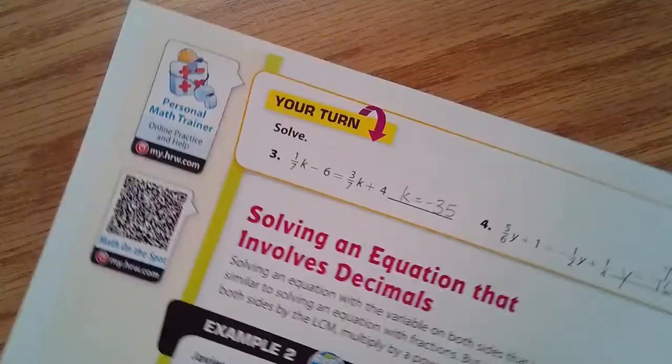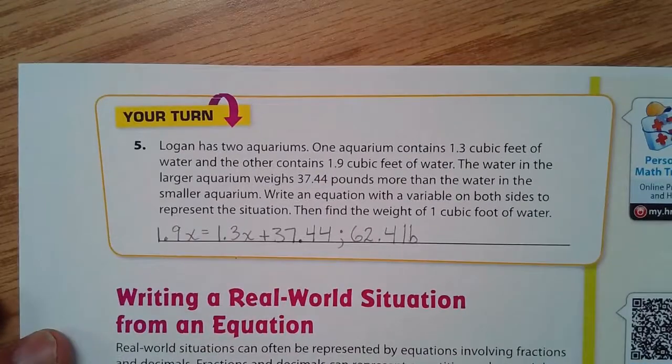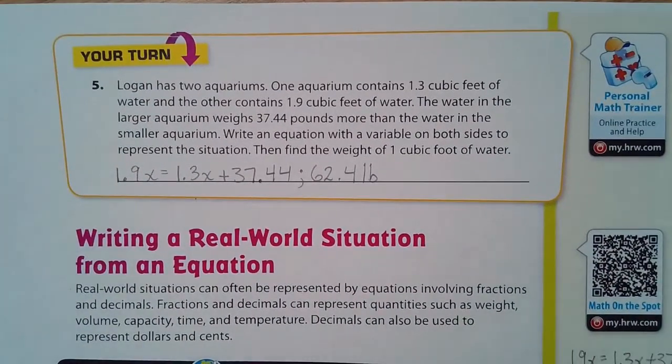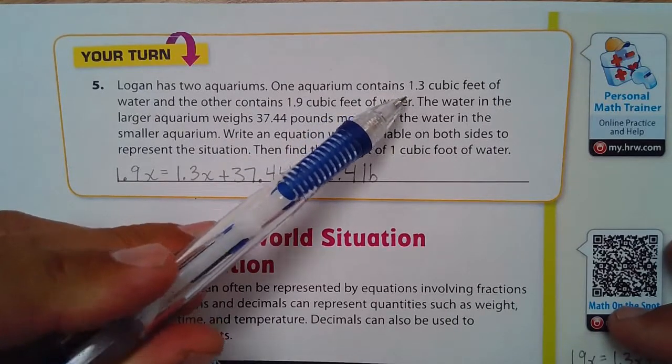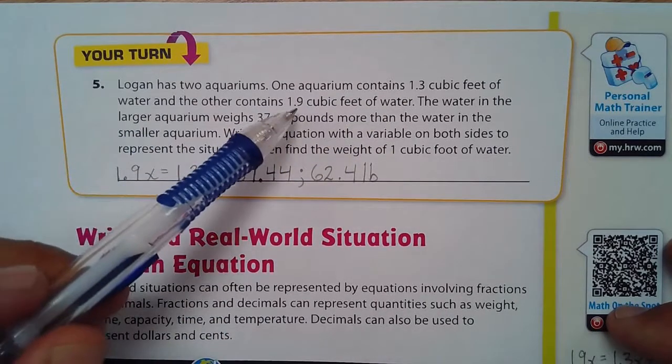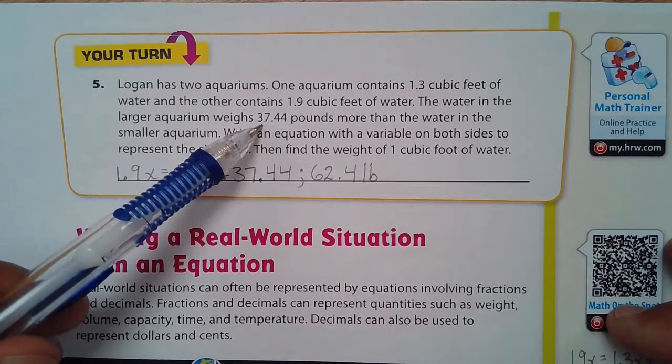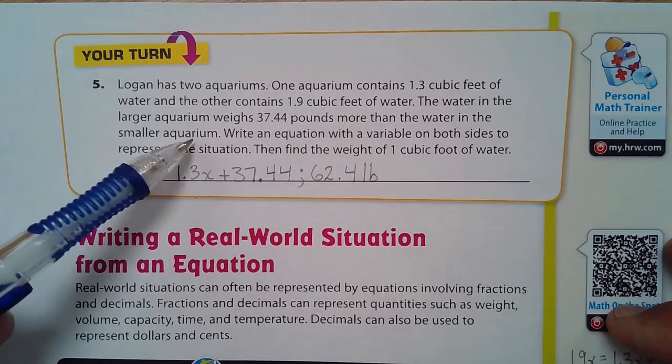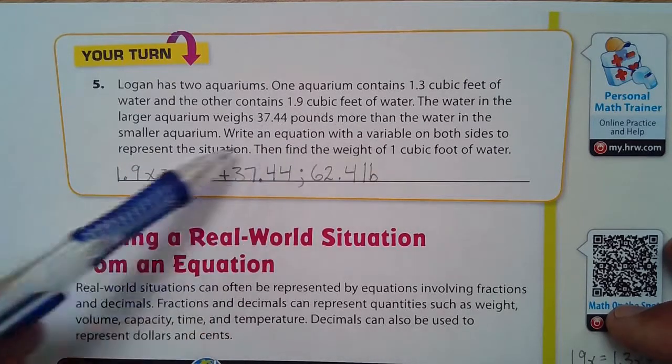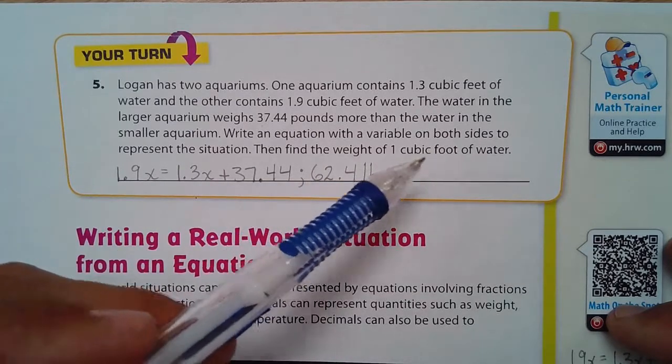We have another one right here, a your turn question. Logan has two aquariums. One aquarium contains 1.3 cubic feet of water, and the other contains 1.9 cubic feet of water. The water in the larger aquarium weighs 37.44 pounds more than the water in the smaller aquarium. Write an equation with a variable on both sides to represent the situation. Then find the weight of one cubic foot of water.